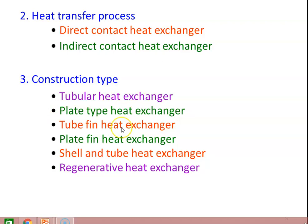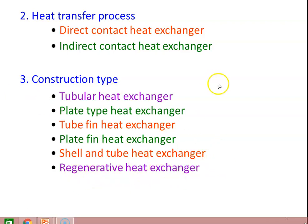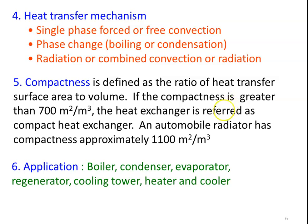Based on construction type, the heat exchanger might be a tubular heat exchanger, plate type heat exchanger, tube-fin heat exchanger, plate-fin heat exchanger, shell and tube heat exchanger, or regenerative heat exchanger. We will see these one by one. Based on heat transfer mechanism, the heat exchanger may be single phase or free convection type.